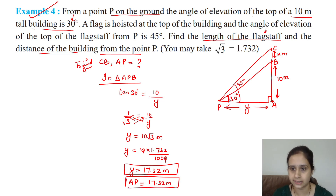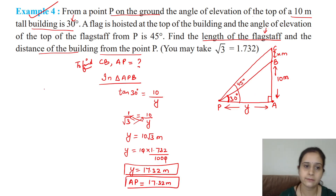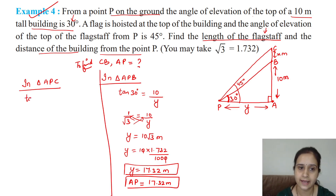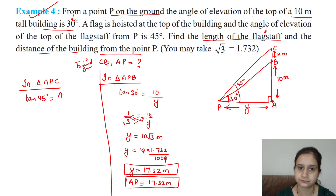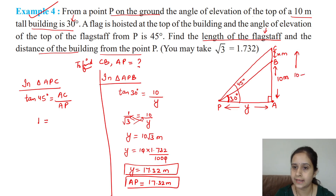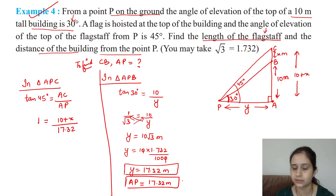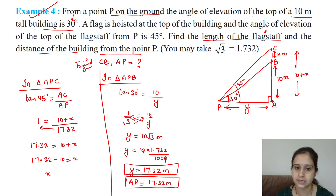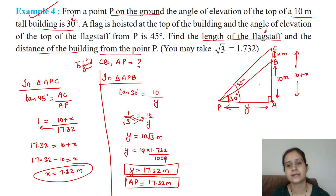Now in triangle APC, angle of elevation is 45°. Tan 45° = AC/AP = (10 + X)/17.32. Since tan 45° = 1, we get 10 + X = 17.32. Therefore X = 17.32 − 10 = 7.32 meters. So the length of the flagstaff is 7.32 meters.